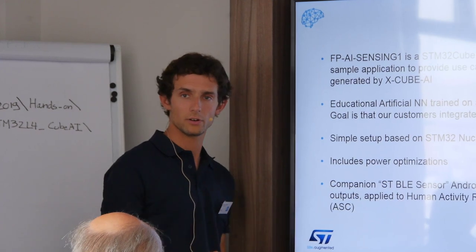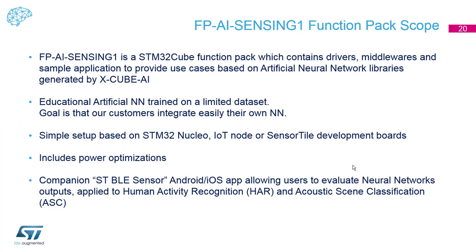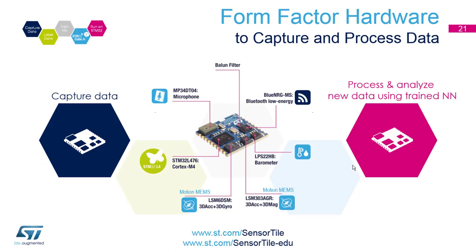Other features implemented in this function pack include BLE connectivity to configure your hardware, send output communication to the screen, and view the results of the neural network. We also have a low-power implementation using FreeRTOS and STM32 advanced stop modes, an OTA feature for firmware and neural network updates, and the form-factor implementation shown here.